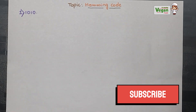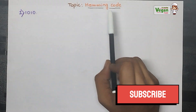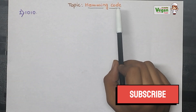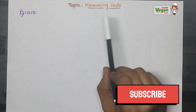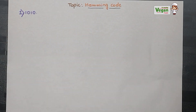Hello everyone, in this video let's discuss Hamming code generation. If you are new to our channel, please subscribe for more engineering related topics. Hamming codes are used for both error detection and correction.